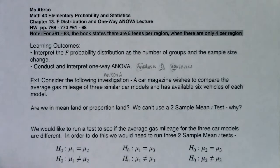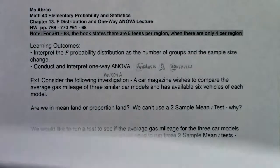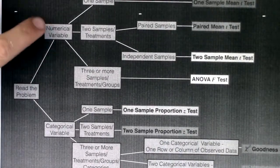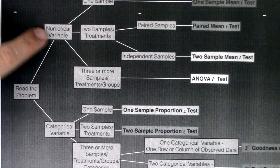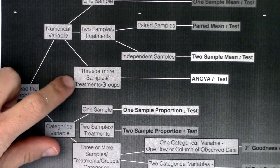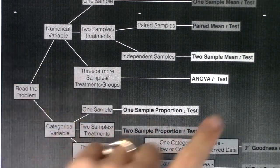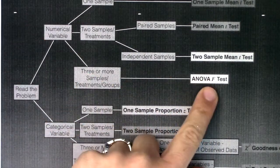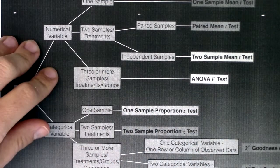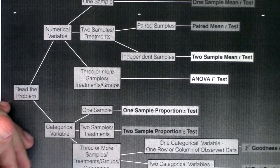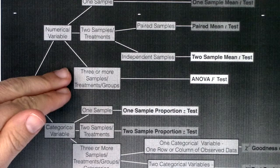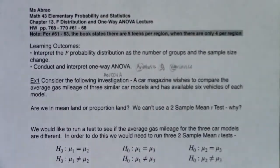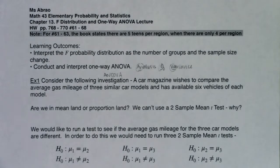And to give you an overview of where we're going, you still have this flow chart that's in play, but basically for everything in chapter 13 we're going to have a numerical variable and we'll have three or more groups. So three or more samples, treatments, groups, and that's when you get to the three or more branch of this tree diagram, we're going to go with the ANOVA F test. So we're going to be in mean land, we're going to be looking at averages, but we're just going to have three or more averages that we want to look at.